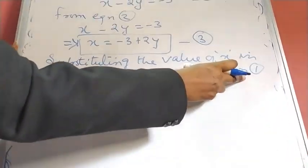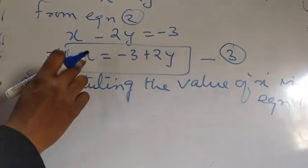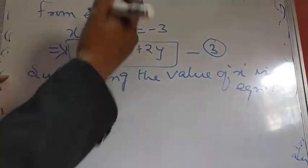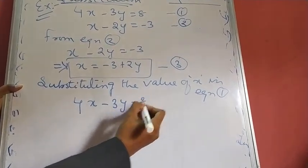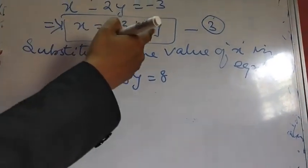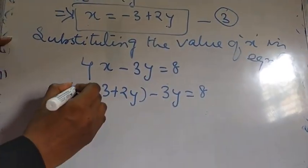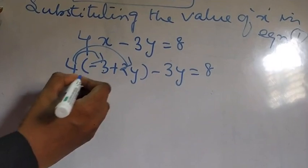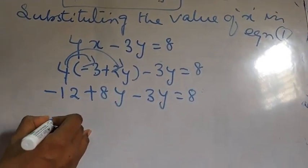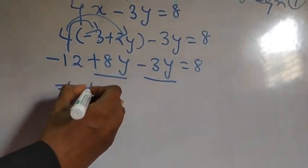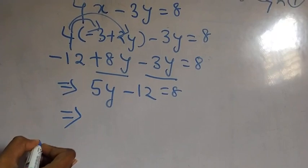Substituting the value of X from equation 3 into equation 1: equation 1 is 4X minus 3Y equals 8. In place of X, I put minus 3 plus 2Y, so we get 4 times (minus 3 plus 2Y) minus 3Y equals 8. Multiplying 4 inside: 4 times minus 3 is minus 12, plus 8Y minus 3Y equals 8.